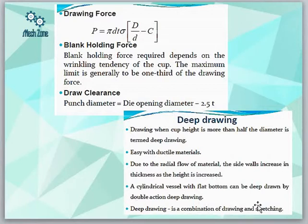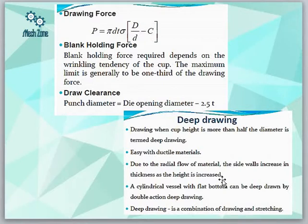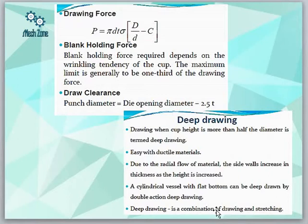A cylindrical vessel with a flat bottom can be deep drawn by double action deep drawing, meaning the drawing action takes place in more than one step — you can also call it tandem drawing. Deep drawing is a combination of drawing and stretching: drawing because we are increasing the depth, and stretching because there is material being stretched as the depth increases. The thickness may remain constant or may slightly decrease.